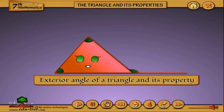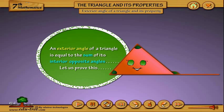Exterior Angle of a Triangle and Its Property. An exterior angle of a triangle is equal to the sum of its interior opposite angles. Let us prove this.